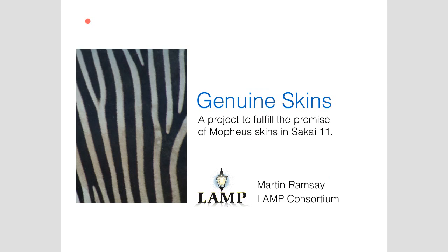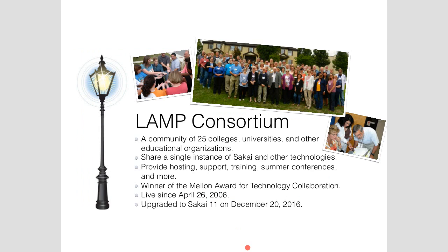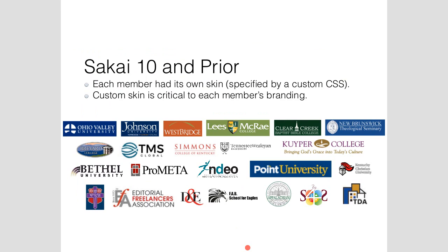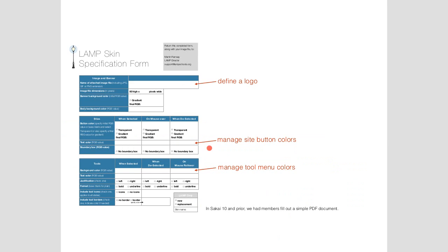I'm going to be talking about skins, with a focus on that. Before I tell you what we're trying to do there, I have to tell you a little bit about the LAMP Consortium, because this is important to how this project unfolds. We're a group of 25 colleges and universities that share — and this is the important thing — a single instance of Sakai. What's important to know about that is that every one of those members needs their own skin. We used to specify them in Sakai 10 and prior with a custom CSS. It's critical for them to be able to brand them — for instance, Point University that Kyle just talked about: their courses need to say Point University and have their color scheme.